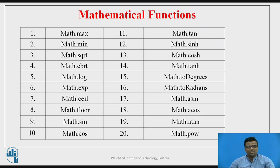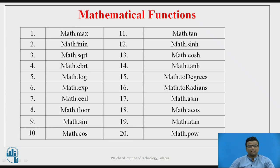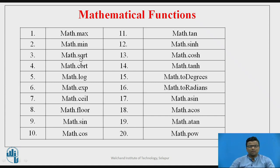Now we are moving towards mathematical functions. There are different types of mathematical functions that can be used in Java programming. The prefix 'math.' is the abbreviation used for all mathematical functions — for example, math.max, math.min, math.sqrt. math.max and math.min give the maximum or minimum number between two provided numbers. math.sqrt is used to find the square root of a number, and math.cbrt is used to find the cube root of a number.